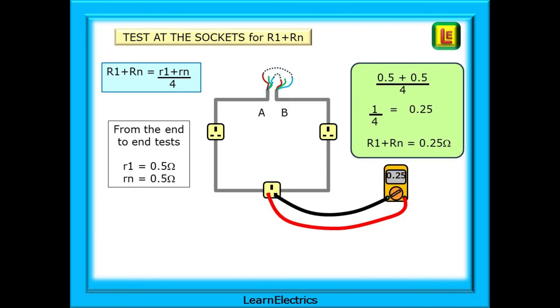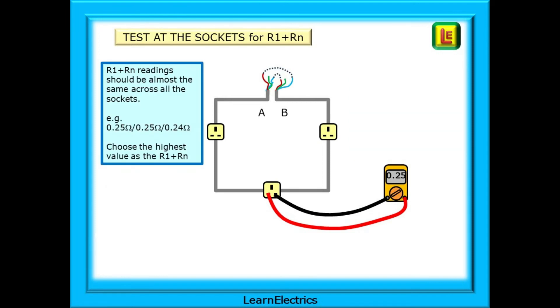Inserting the end-to-end test results for little R1 and Rn into the formula, we should expect our test meter to return similar readings of about 0.25 ohms. By doing this calculation, we are double-checking that the readings are correct and also checking that the circuit is wired correctly. Big R1 plus Rn readings should be almost the same across all the sockets. For example, 0.25 ohms, 0.25 ohms, 0.24 ohms.